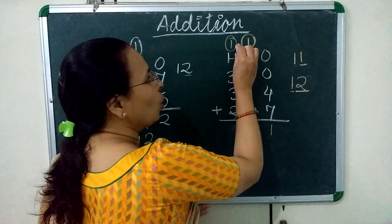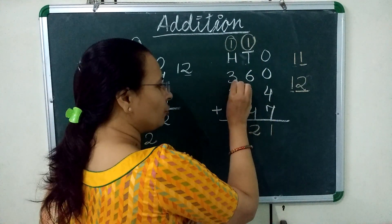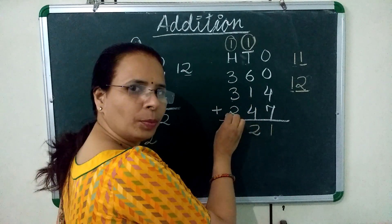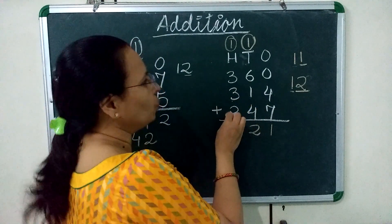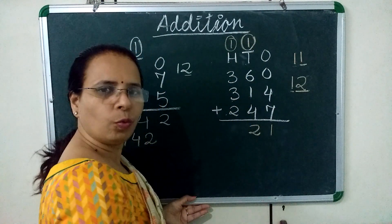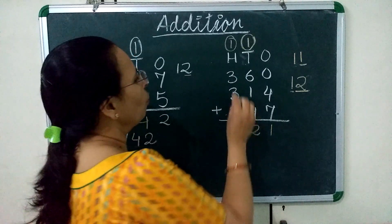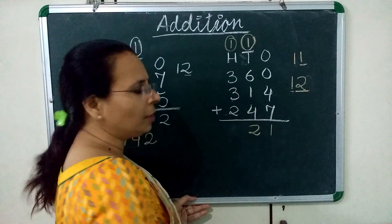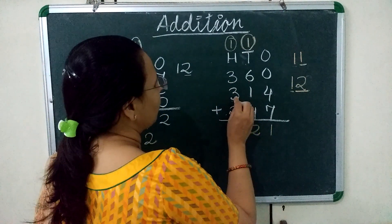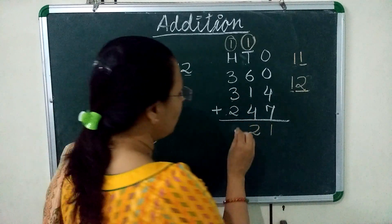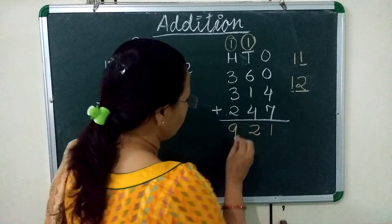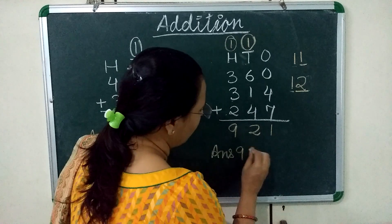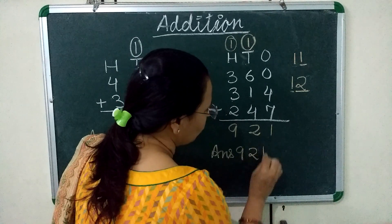Now we will add 1 plus 3 plus 3 plus 3 plus 2. 1 plus 3 is 4, 4 plus 3 is 7, and 7 plus 2 is 9. So our answer is 921.